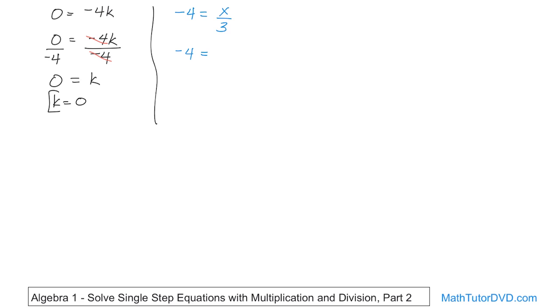So we'll rewrite the problem. We're going to actually take this away. And then we're going to rewrite the problem. It'll be x over 3. Now we're going to multiply both sides by 3 because we're going to do the opposite. So we'll multiply the left and the right by 3.